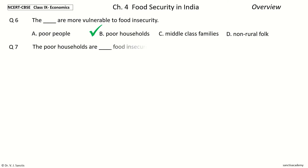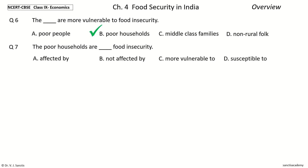Question 7: The Poor Households are Dash food insecurity. The options are Affected by, Not Affected by, More Vulnerable to, Susceptible to. Your time to choose. And the answer is More Vulnerable to. So, the Poor Households are more vulnerable to food insecurity.